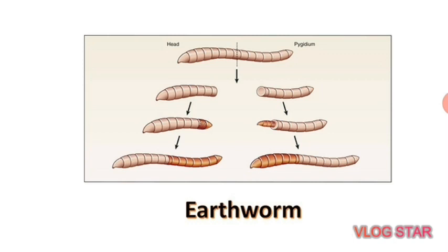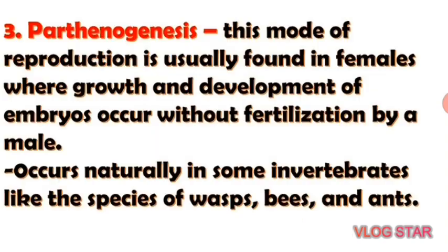Earthworms are sensitive to heat, light, and touch. They may reproduce both asexually and sexually. Next is parthenogenesis. This mode of reproduction is usually found in females, where growth and development of embryos occurs without fertilization by a male. Examples include wasps, bees, and ants — they don't need males for reproduction.